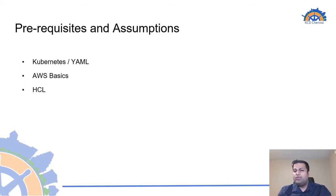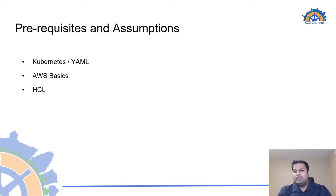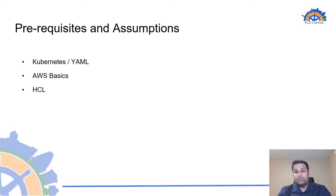Before we begin, let's go over some of the prerequisites and assumptions. Since Crossplane installs on top of Kubernetes, a basic understanding of Kubernetes is expected. I'll be using some examples of core services in AWS cloud, so a basic understanding of AWS or cloud computing in general would be helpful. In some of the examples, I'll also be making use of simple Terraform configuration written in HCL. So let's begin and get introduced to Crossplane.